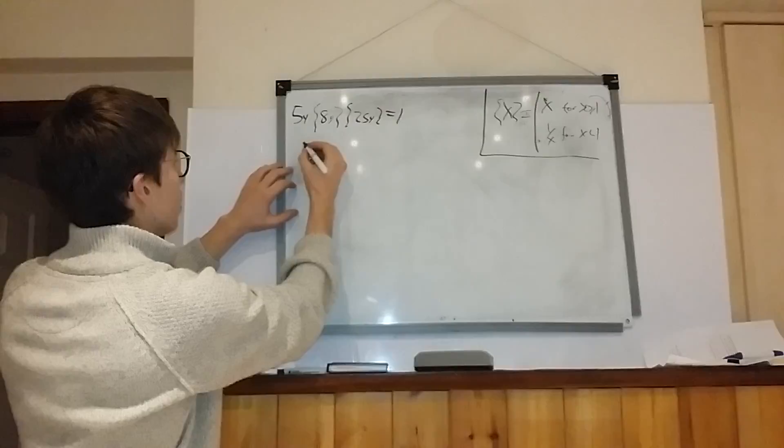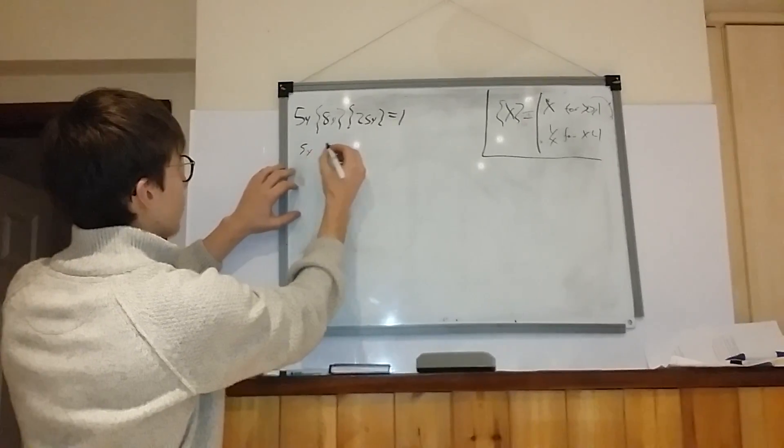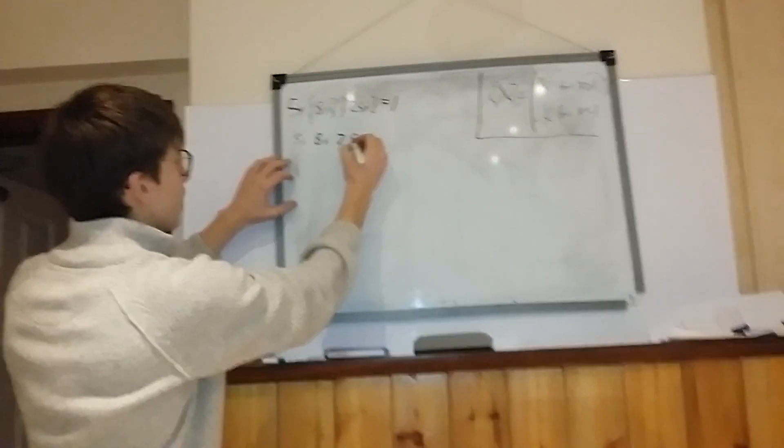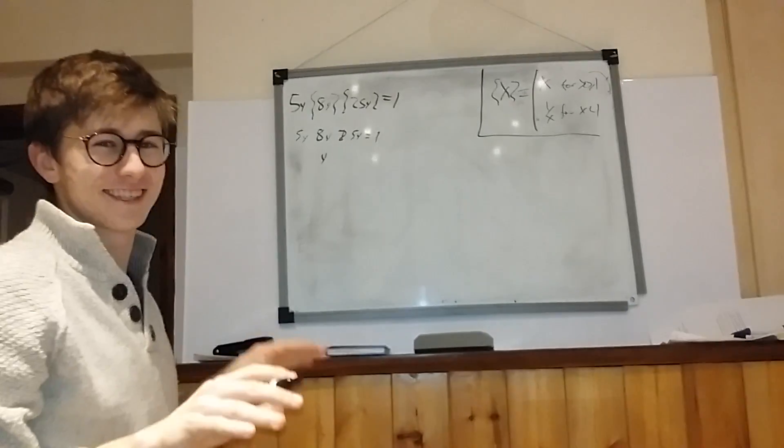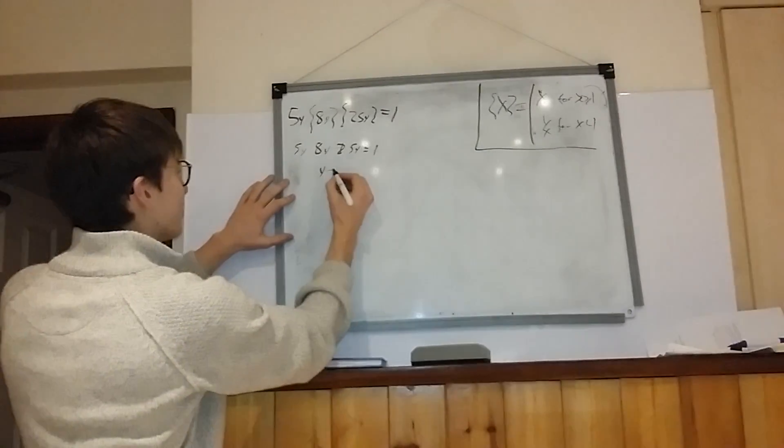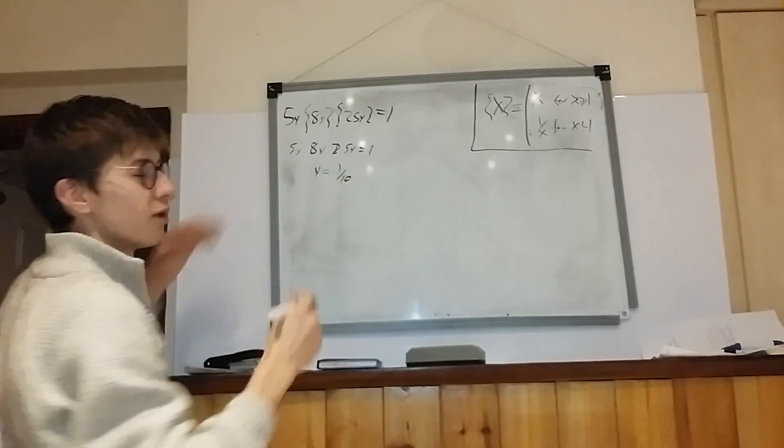So first of all you do 5y, 8y, 25y is equal to 1. For that, leave this as an exercise to the reader. That gets you to 1 over 10.